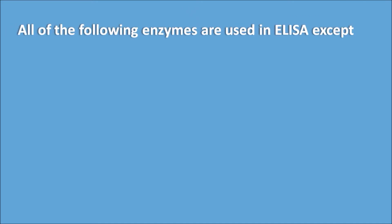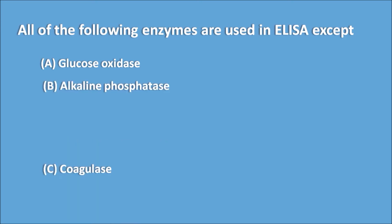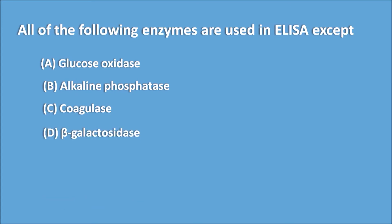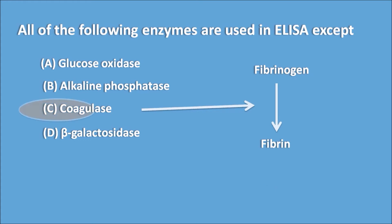All of the following enzymes are used in ELISA except one. Coagulase is the enzyme that converts fibrinogen to fibrin, and it is not used in ELISA. All other listed enzymes are used in ELISA, so Option C is the answer for this question.